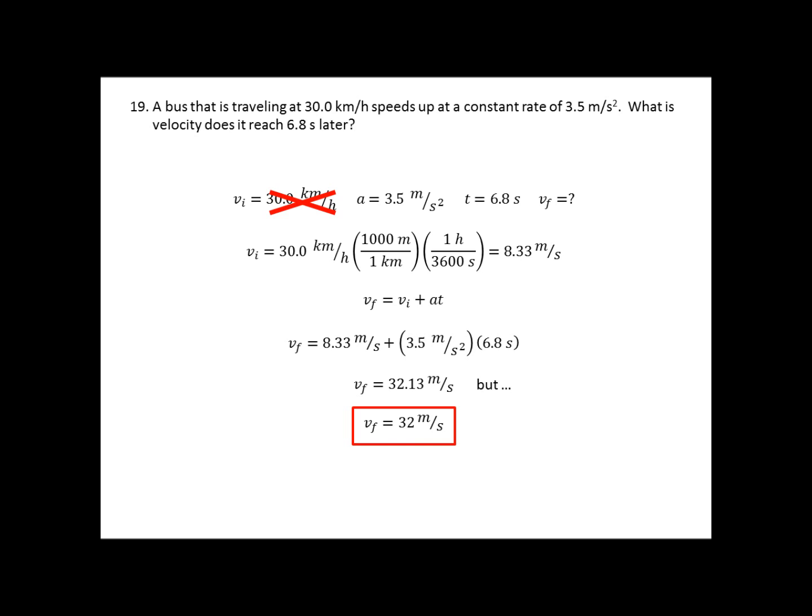Now, I'm not actually going to leave my answer like that. Because there's a standard practice in science that we have to observe sig figs. If I look back at the numbers given to me, the 30.0 kilometers per hour has three sig figs. The acceleration has two significant figures, the three and the five. The time also has two significant figures. So, my answer, I'm only going to leave two significant figures. So, I round it down to 32 meters per second.